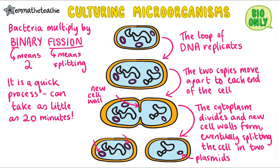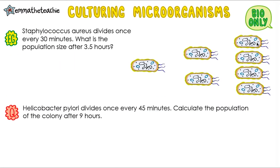It's a very quick process and it can take as little as 20 minutes for the bacterial cell to split in two, provided it has enough nutrients and a suitable warm temperature. You need to know how to calculate the number of bacteria in a population. You'll be given the mean time and asked to work out how many there are after a certain length of time. So let's look at an example.